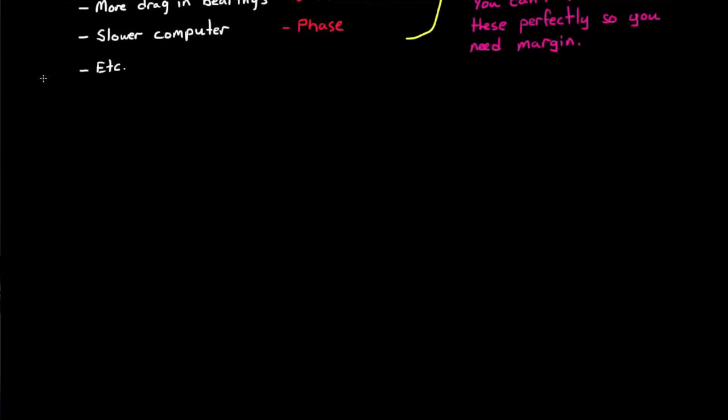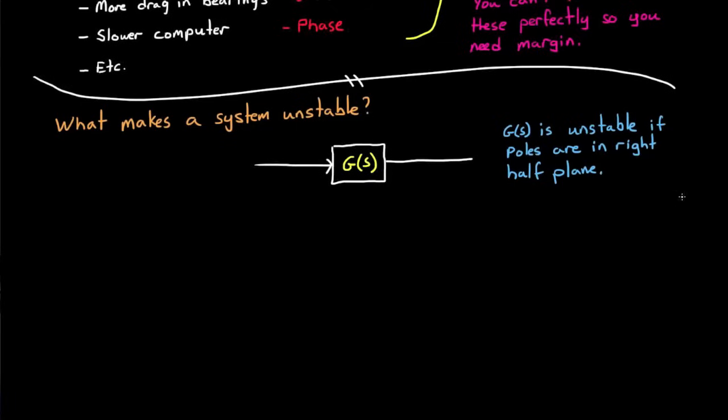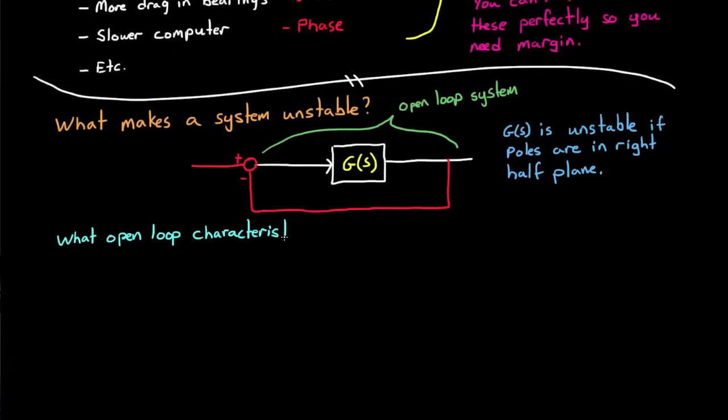But to really understand stability margins, we first need to understand what makes a system unstable in the first place. If you have a system g of s, then it's unstable if at least one pole or a root of the characteristic equation is in the right half plane. But as I've explained in my video Stability of Closed-Loop Systems, it's sometimes impractical to design a system in closed-loop form, and you're much better off designing the open-loop system and then using tools like Bode, root locus, and Nyquist plots to assess the closed-loop stability and performance.